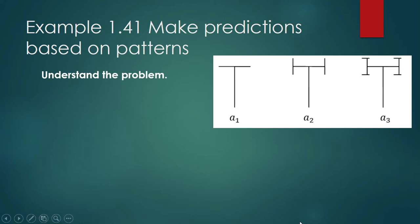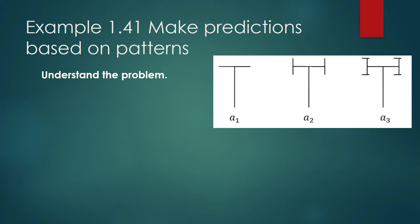Let us begin by understanding the problem. If I were not a math person, what I would do is draw the line segments described in the instruction — draw line segments at the ends of the shortest line segment — and then count them, two line segments here, and so on, until I get to the 12th term and the 21st term. So this is a counting problem.